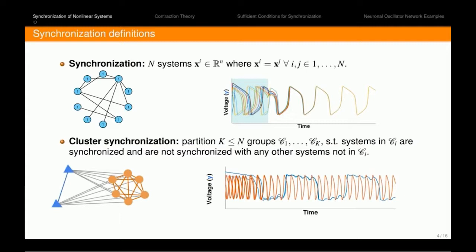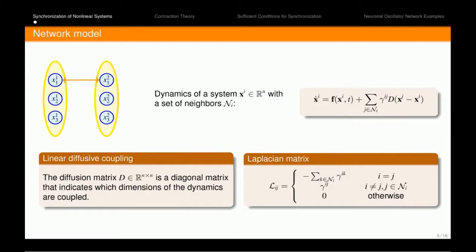The network model that we consider is a set of n nodes, which are represented by the yellow ovals here. Those nodes each can have a lower case n dimensional dynamics. I would like to draw your attention to two components of this equation. Firstly, the diffusion matrix D represents a diagonal matrix that indicates which dimensions of the dynamics are coupled. For example, in this example here, only the first states are coupled, which is the common characteristic of many neuronal oscillator models since the first states typically represent the voltage dynamics of that neuron. Secondly, the gamma_ij here represent the strength of coupling between any given oscillators in the network, and those can be used to form a Laplacian matrix in the general sense. So now Zahra will go through some background on contraction theory and show you how we find our sufficient conditions.